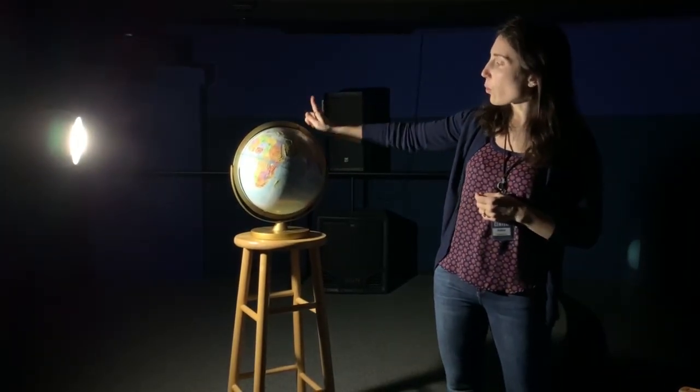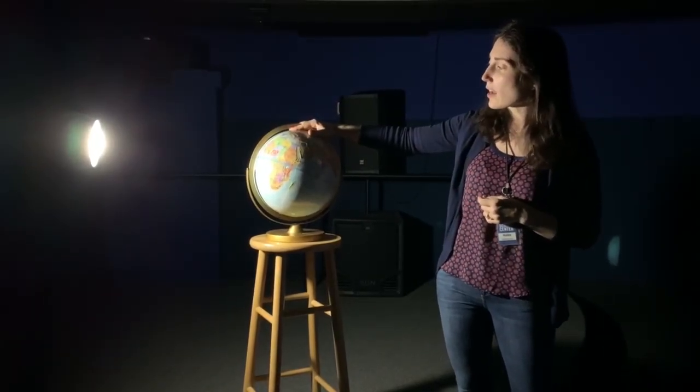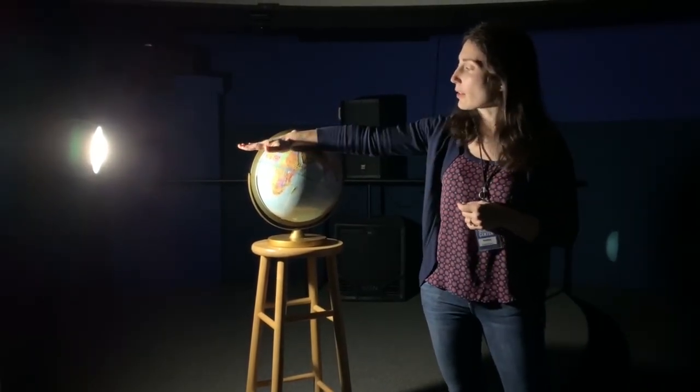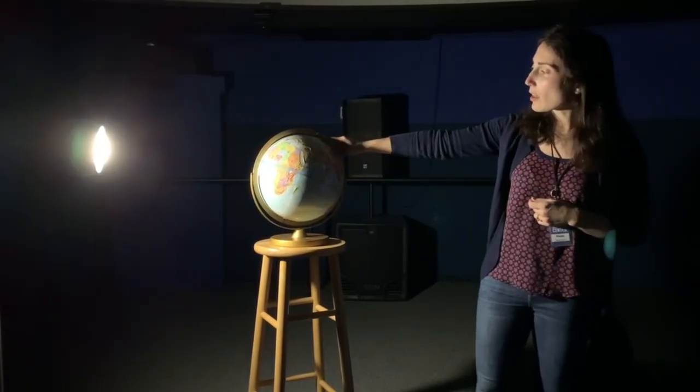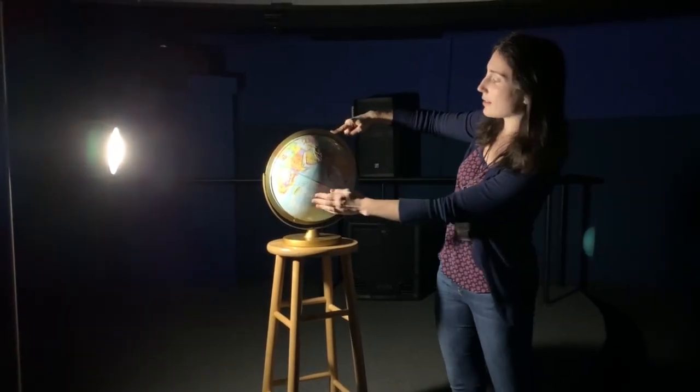which means that especially in the northern hemisphere the Sun is going to appear pretty low in the sky. But I think one of the most extreme examples is up here on the North Pole, so kind of right where my finger is.